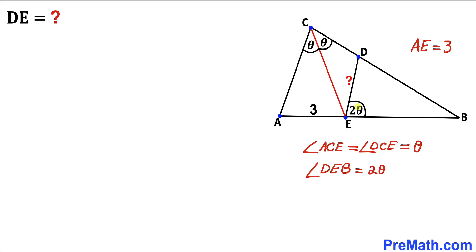Welcome to pre-math. In this video we have got triangle ABC such that angle ACE and angle DCE are congruent and each is equal to theta. Moreover, angle DEB is 2 theta and line segment AE is 3 units.